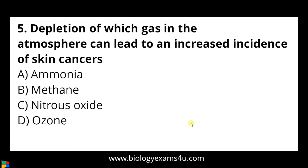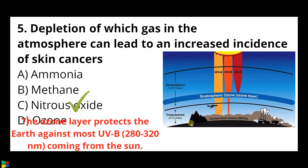Question number five: depletion of which gas in the atmosphere can lead to an increased incidence of skin cancers? Options: a) ammonia, b) methane, c) nitrous oxide, d) ozone. The answer is ozone. The ozone layer protects the earth from harmful UV rays from the sun. Of UVA, UVB, and UVC, UVB is highly harmful, ranging from 280 to 320 nanometers. The ozone layer in the stratosphere minimizes the entry of UVB rays reaching the earth, protecting us from diseases associated with UVB.